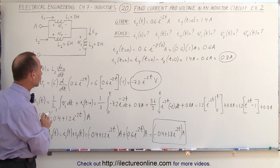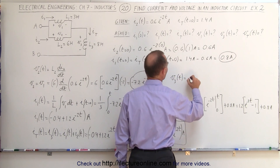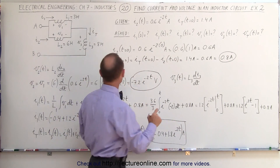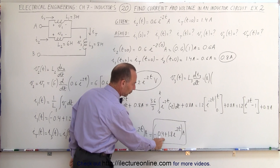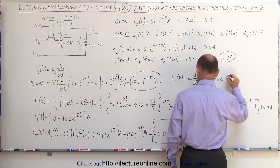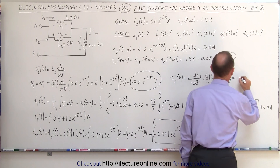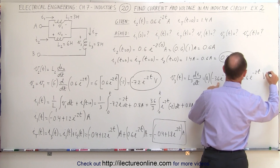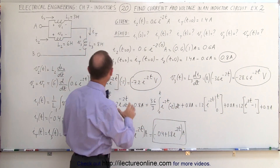Now we can find the voltage across inductor 3: V₃(t) = L₃ times di₃/dt. L₃ is 8 henries. The derivative of minus 0.4 is 0, and the derivative of 1.8e^(-2t) is minus 3.6e^(-2t). So V₃(t) = 8 times minus 3.6e^(-2t) = minus 28.8e^(-2t) volts. Checking: 8 times 3.6 equals 28.8, confirmed.